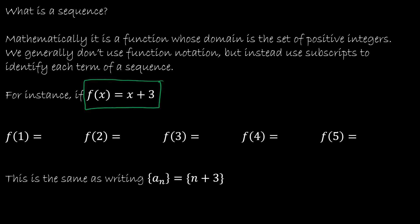I can certainly find f of 1 by taking 1 plus 3 to get 4, f of 2 by taking 2 plus 3 to get 5, and so on and so forth. When we're writing this in terms of a sequence instead of a function, we would instead write a sub n is equal to n plus 3.